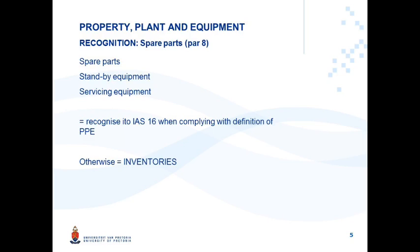Let's quickly recap the definition of Property Plant and Equipment. From IAS 16, PPE is tangible assets that are used by the entity specifically in the production of goods, rendering of a service, admin purposes or for rental to others, and used over more than one period. That part of the definition — being used over more than one period — is usually the most important factor that influences your decision whether the costs should be capitalised or not.